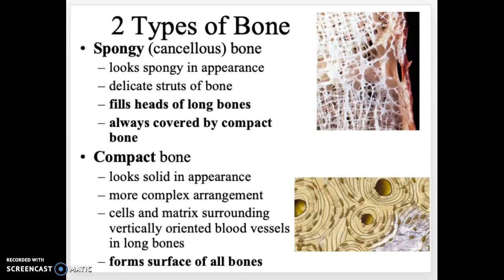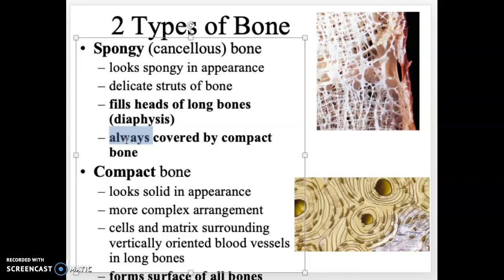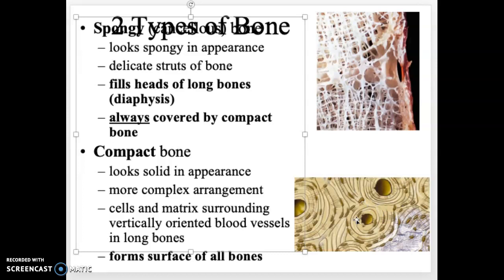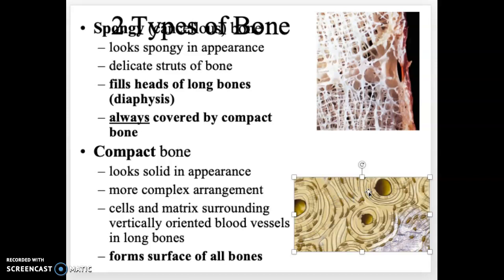There are two types of bone. Spongy bone looks like a sponge and is found at the heads — the ends — of long bones. It is always covered by compact bone, as spongy bone is not strong enough to be on the outside and would result in more fractures. Compact bone looks more solid with small holes in the center for blood vessels and nerves, and it lines the outside surface of all bones.